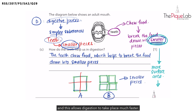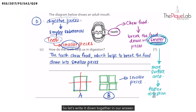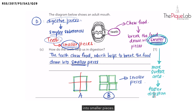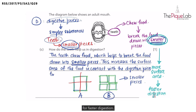This allows digestion to take place much faster. So let's write our complete answer together: the teeth chew food which helps to break the food down into smaller pieces. This increases the surface area of the food in contact with the digestive juices, allowing for faster digestion. And that is our answer.